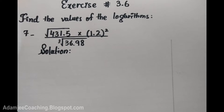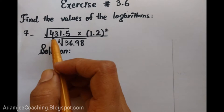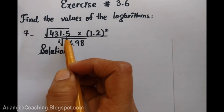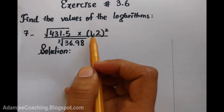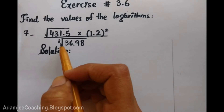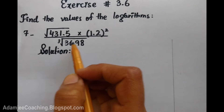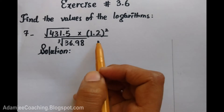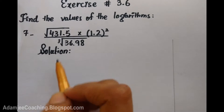Assalamualaikum. My name is 3.6. Question number 7: under root 431.5 multiplied by 1.2 squared, divided by cube root of 36.98.